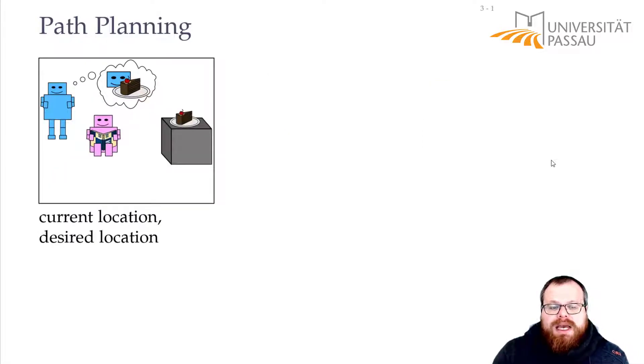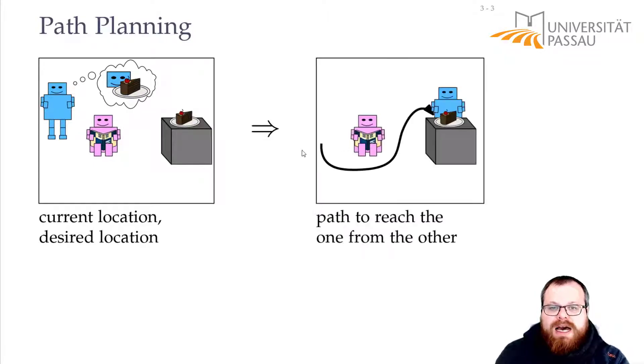Similarly, if I am standing at some location and I want to get to a desired location—for example, I want to get to the cake that's standing on the table—then I again have to do some planning because I have to find a path to get there. There might be some obstacles in the way. For example, my girlfriend was reading a magazine. So I have to find a path that avoids all these obstacles. And this is the problem we want to look at today.